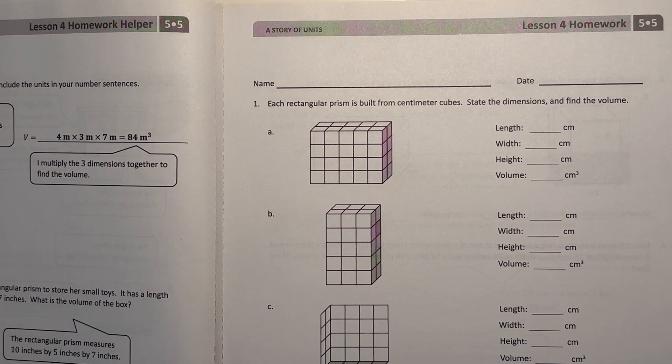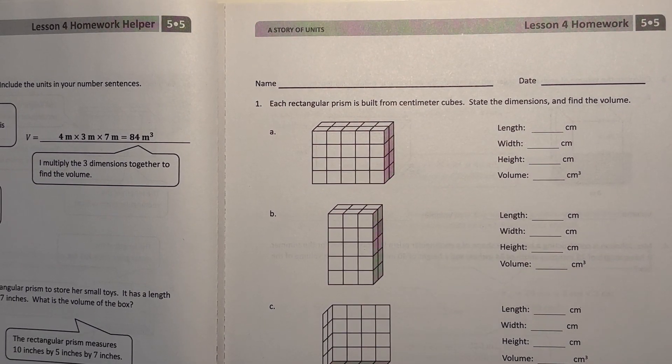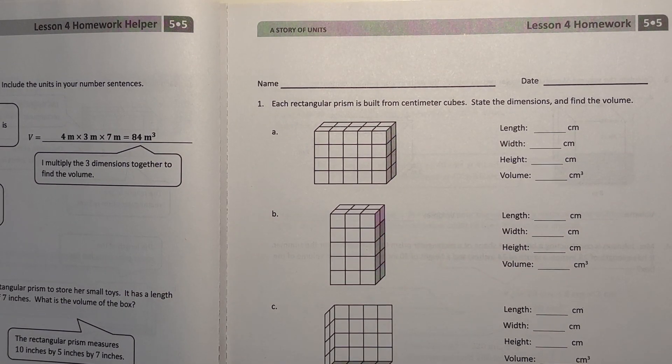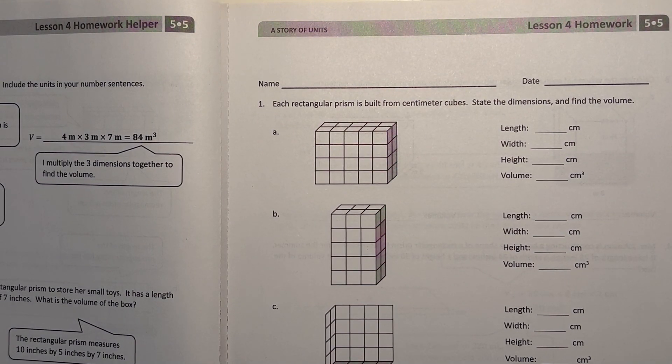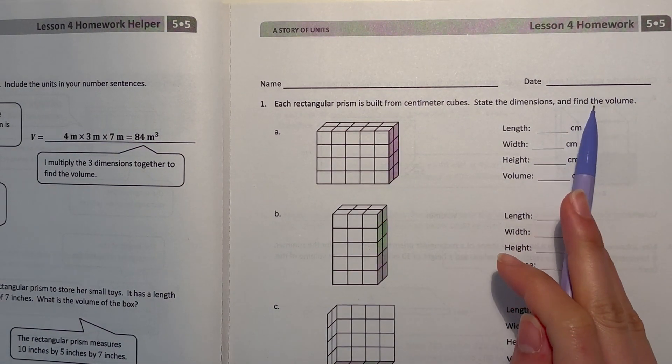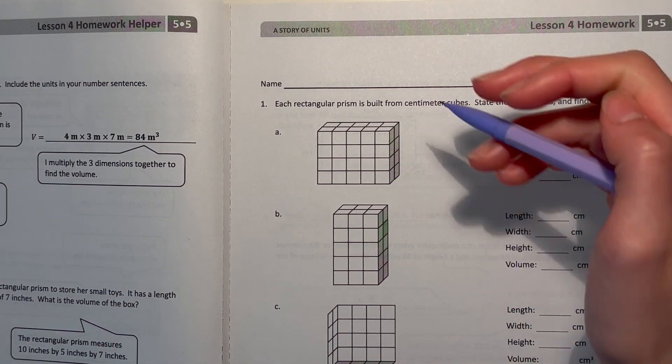Hey guys, I'm here today doing the Eureka Math Grade 5 Module 5 Lesson 4 homework, so let's get started. Number one: each rectangular prism is built from centimeter cubes. State the dimensions and find the volume.